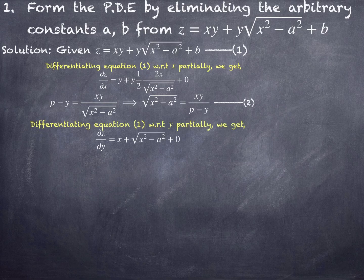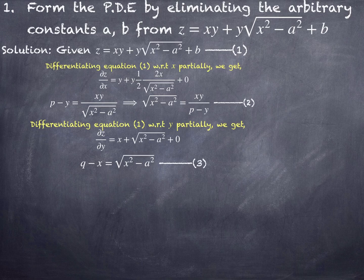Now differentiating equation number 1 partially with respect to y, we get ∂z/∂y equals x plus √(x²-a²). x is a constant so differentiation of y becomes 1 in both terms, and differentiation of b becomes 0. Since ∂z/∂y is q, transforming x to the other side gives q minus x equals √(x²-a²).